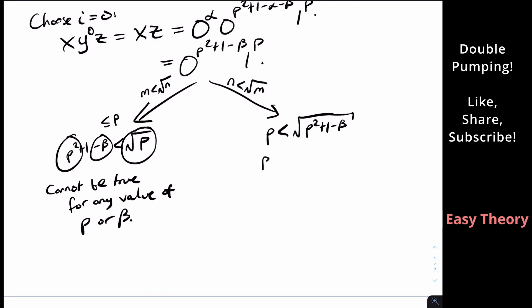If we square both sides, P squared is less than P squared plus one minus beta. And if we simplify this, this says that beta has to be strictly less than one, which is a contradiction, because we said that beta is at least one. Contradiction.